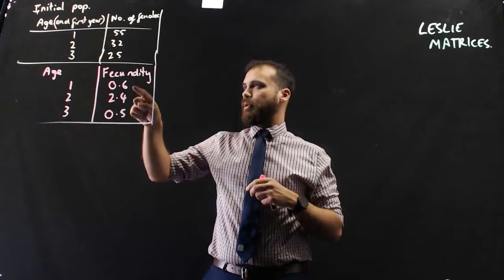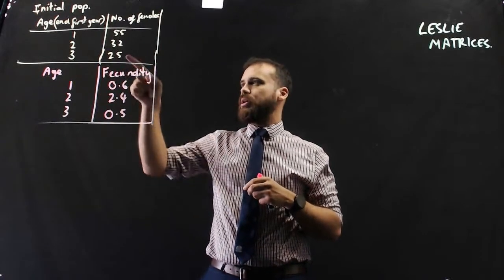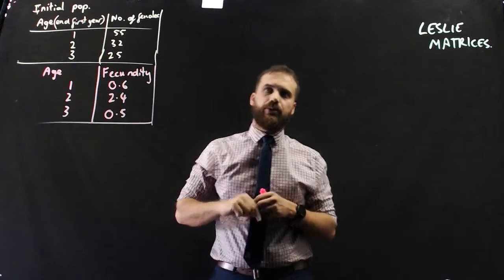We can probably calculate how many babies we expect by taking 55 and multiplying it by 0.6, 32 and multiplying it by 2.4, and 25 and multiplying it by 0.5.